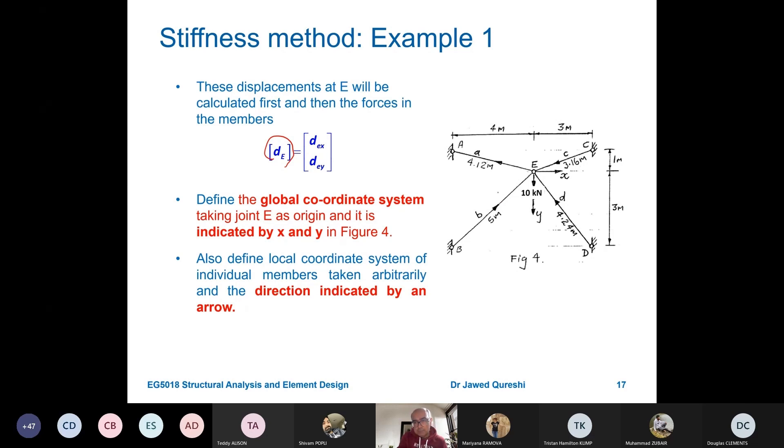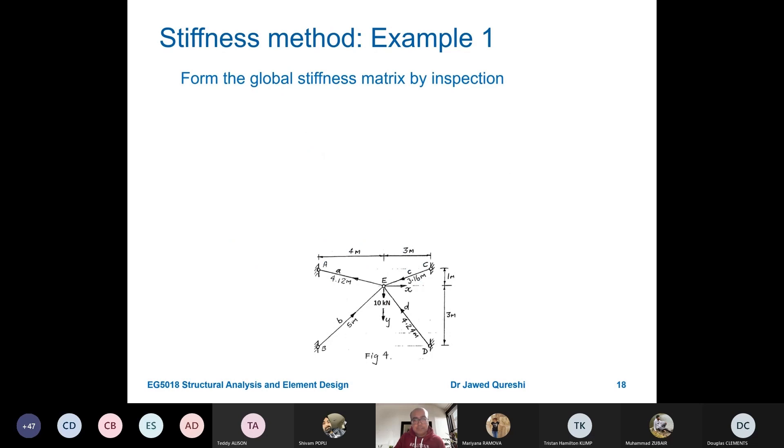For B, it is upwards. That means that its local coordinate system is like this. X will be positive. Its Y is going to be negative because it is against the direction of global axis. And here again, X will be leftwards. Y will be upwards. Both X and Y will be negative. And here, X will be negative. Y will be positive. Now, first, we have to obtain the stiffness matrix.